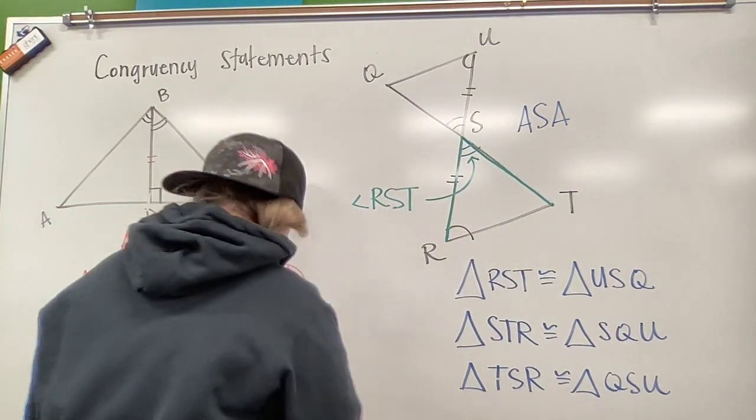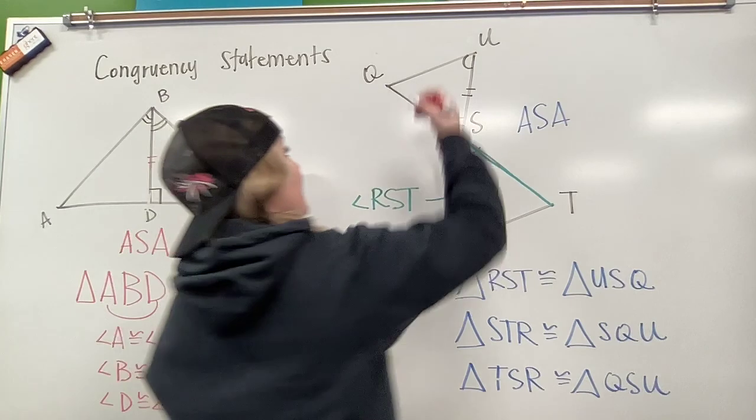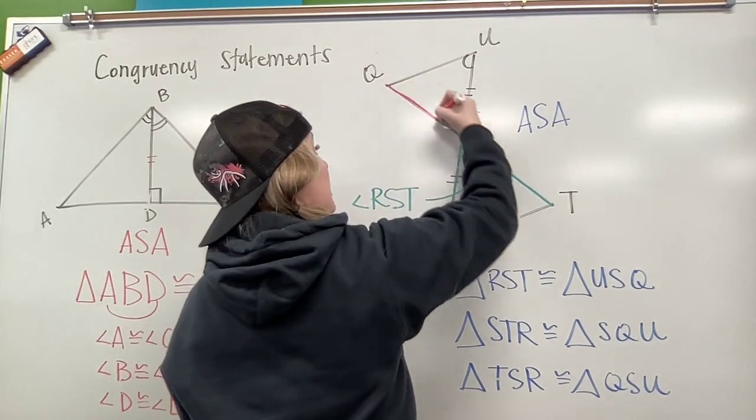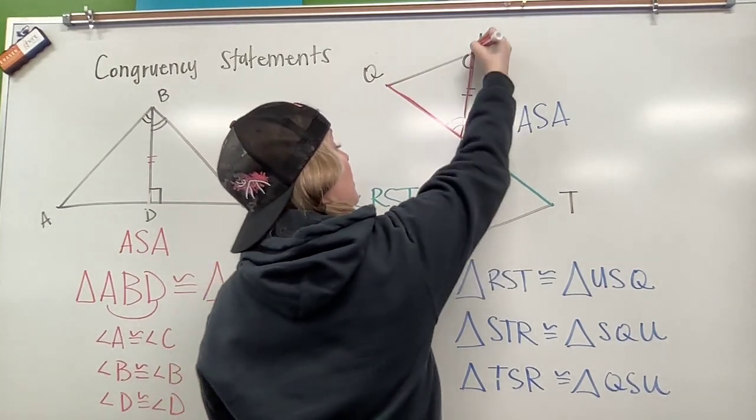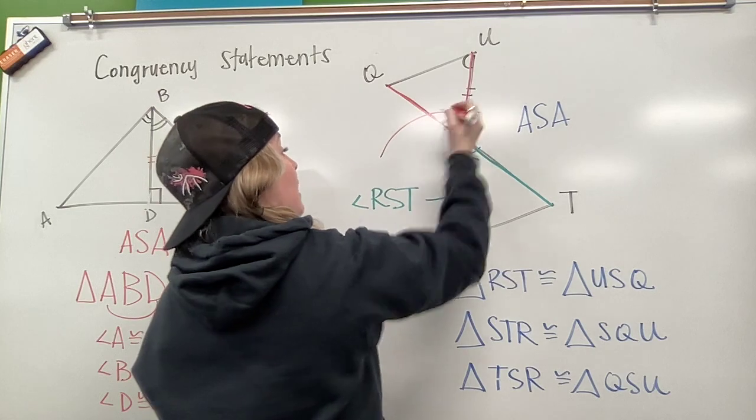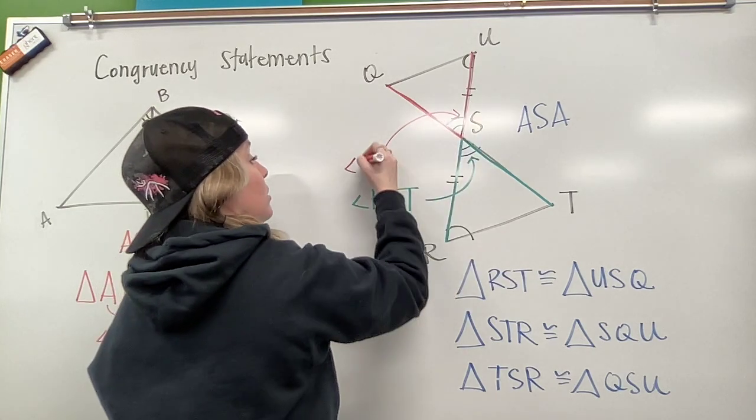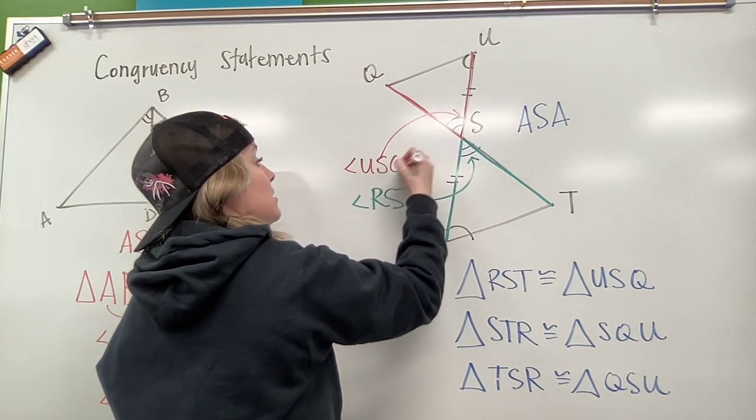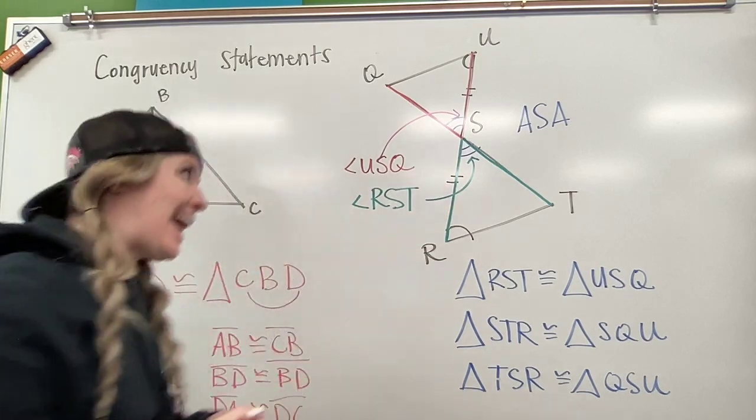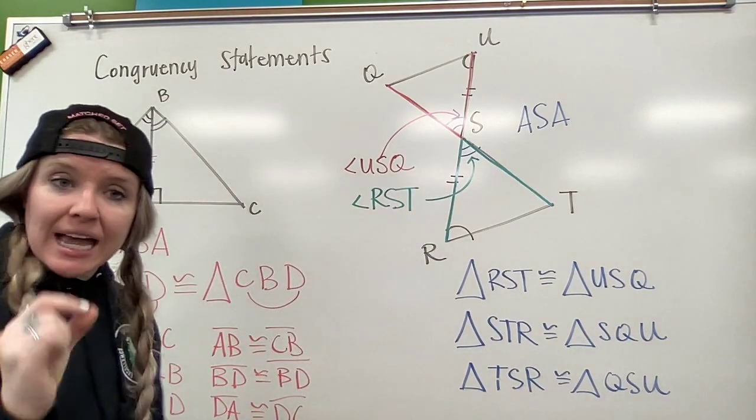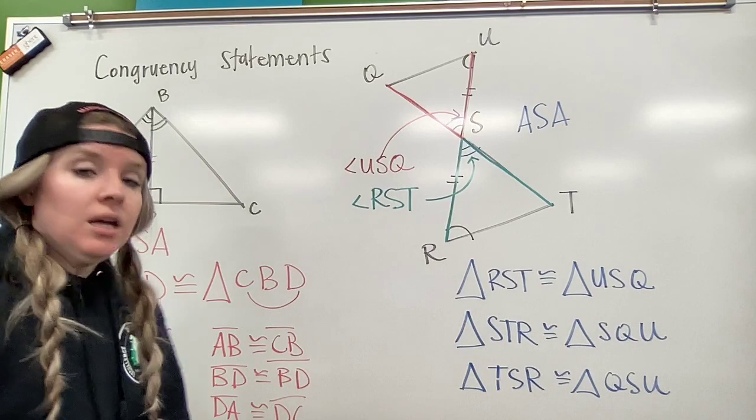All right. Then our upper angle, if we're talking about that upper S, it's created here, so this angle I would call angle U-S-Q or Q-S-U, as long as S is that middle point.